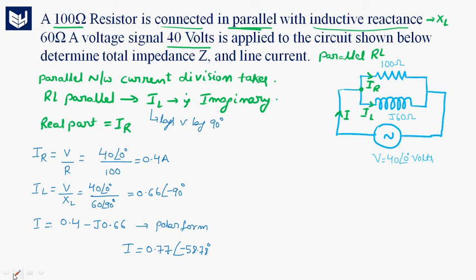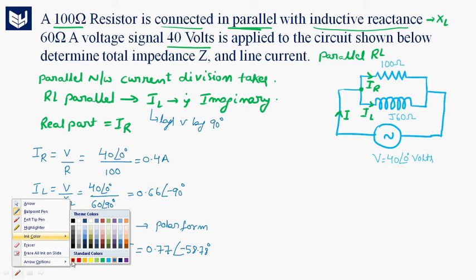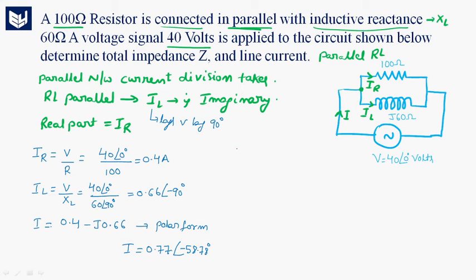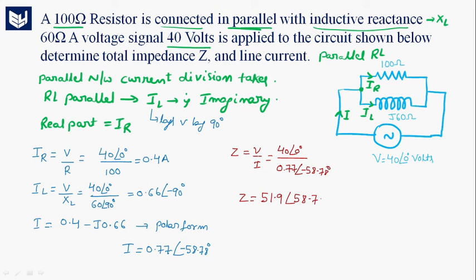Now the total impedance Z in the circuit is defined as the ratio of voltage to current. The voltage is 40∠0° and the current is 0.77∠-58.78°. By calculating this, we get Z equal to 51.9∠58.78° ohms.